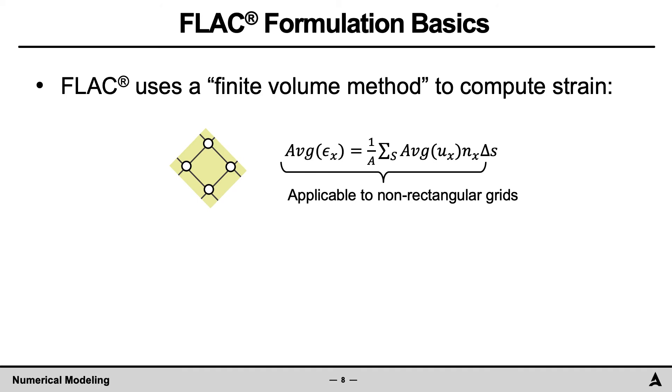One of the many important mechanical calculations is strain. FLAC uses the finite volume method to compute strain, the equation for which is provided here for the average normal strain in the zone in the x-direction. As shown, the average strain is a function of the nodal displacements and the normal vectors and lengths of the zone sides. Note that such a strain computation can occur for any shape of zone.